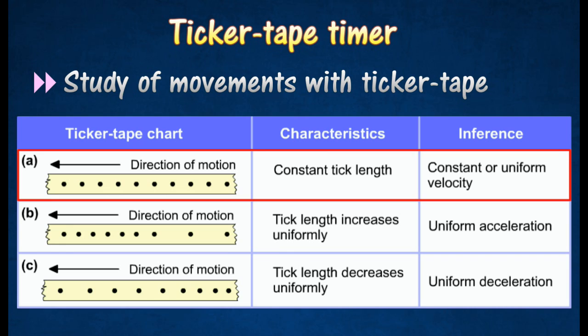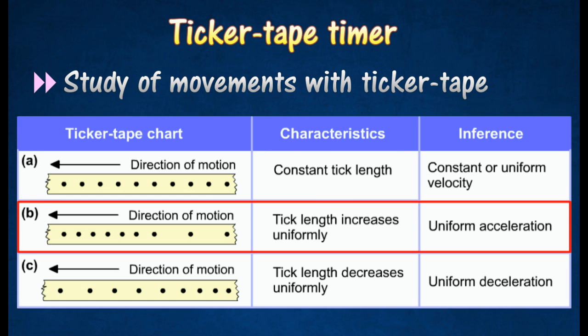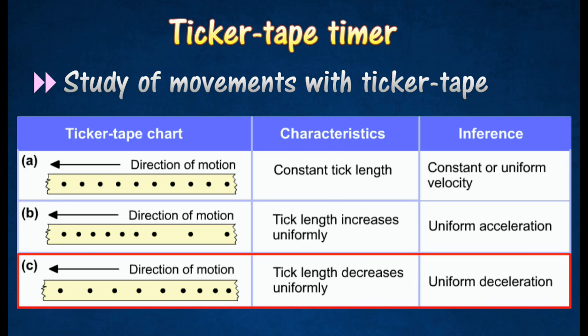Example A shows uniform distance between successive dots for a uniform velocity. Example B shows ticker tape for objects moving with an accelerated motion. Example C shows ticker tape for objects moving with uniform deceleration.